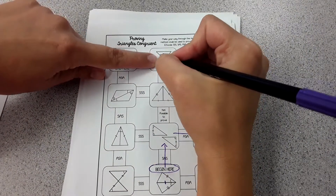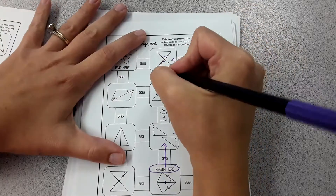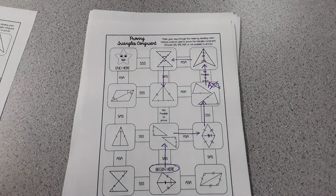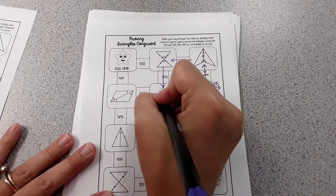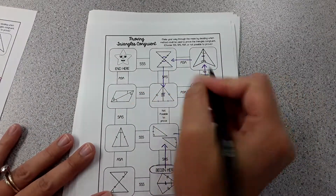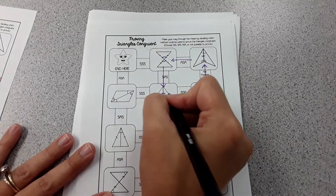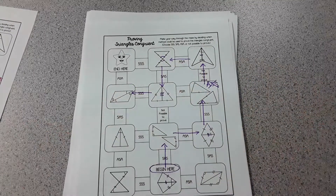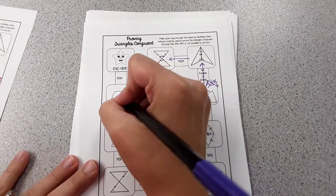So here we have side-angle-side and side-angle-side — it actually goes down, I was just attempting to draw an arrow to the end but it goes down. Then because of the reflexive property this side is the same as itself, and then you have side-side-side and side-side-side congruence.